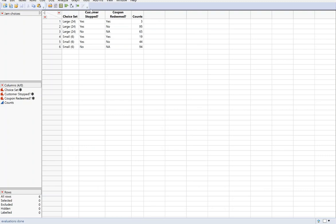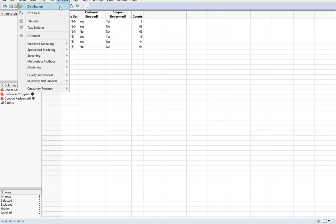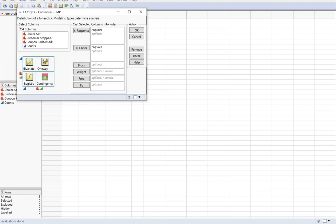Okay, so we're going back to this jam choices data set. We're doing analyze fit y by x. And for now, we're just looking at whether the customer stopped, that's our response, and the size of the choice set, that's our explanatory. Of course, we need to put our counts in the frequency box.